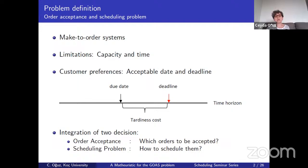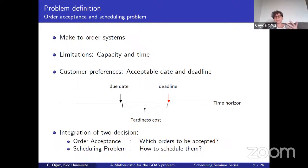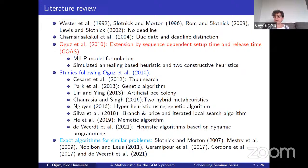In our problem, I will present a generalized version of the order acceptance problem. The generalization comes from including, on top of due dates and deadlines, release times for orders and also sequence-dependent setup times, which obviously makes the problem more difficult. To differentiate this from order acceptance and scheduling problems in the literature, we call it the generalized order acceptance and scheduling problem.